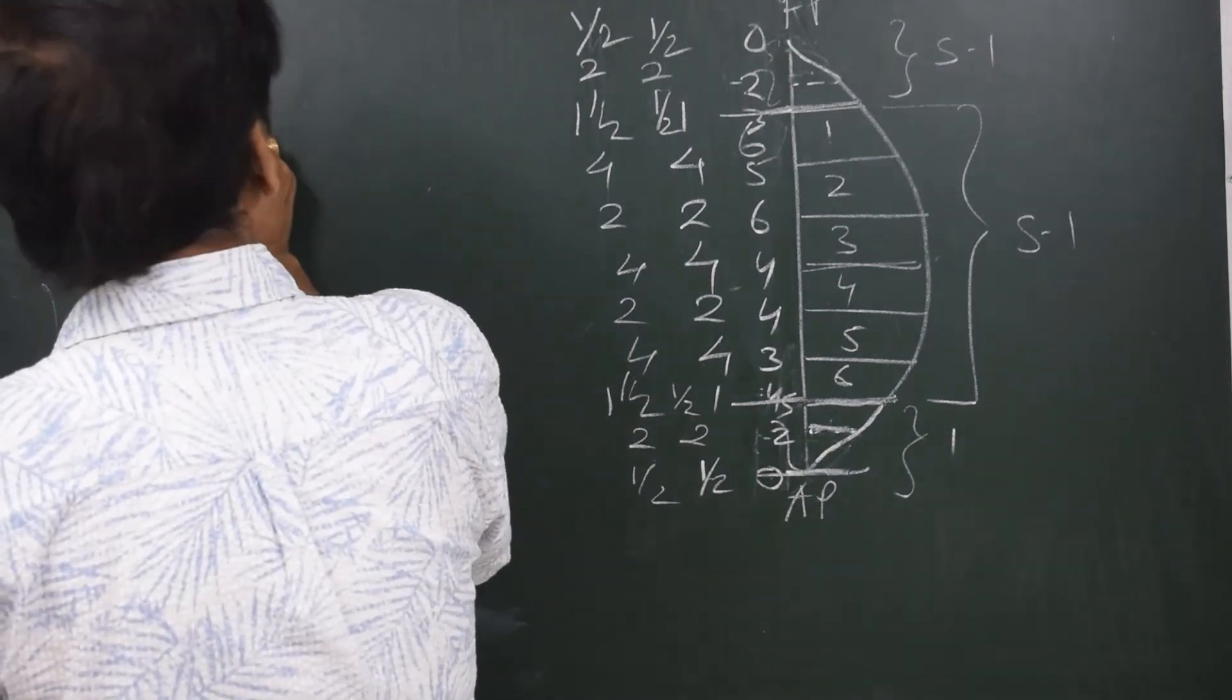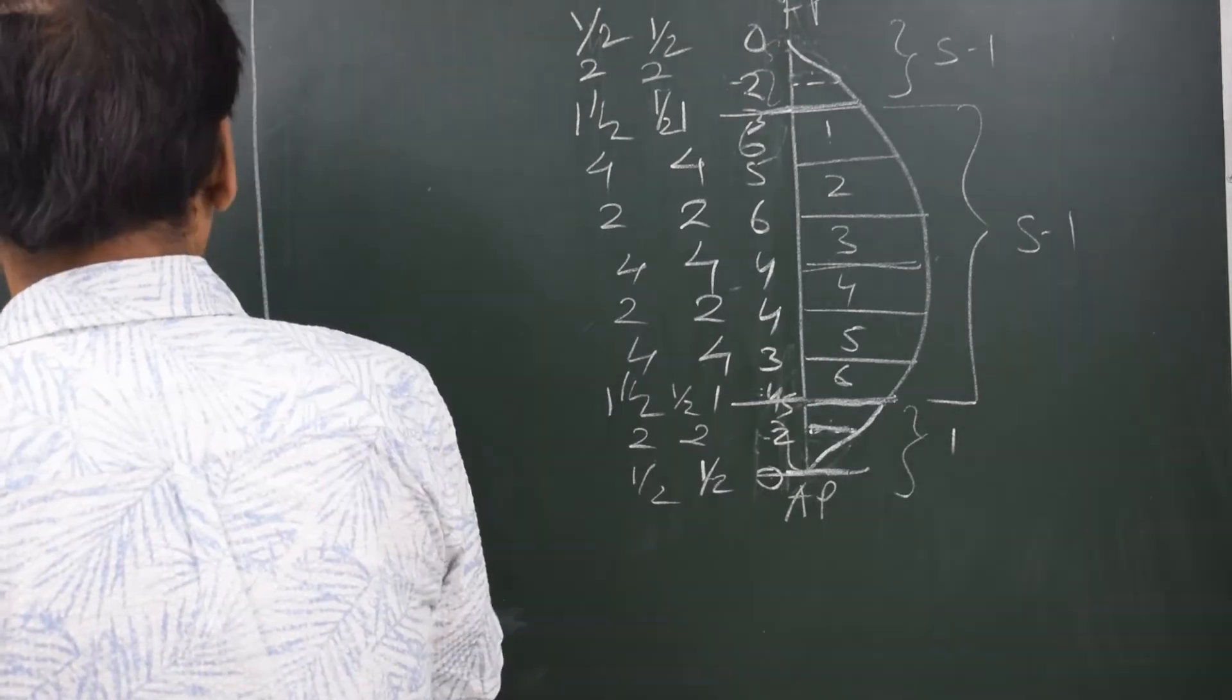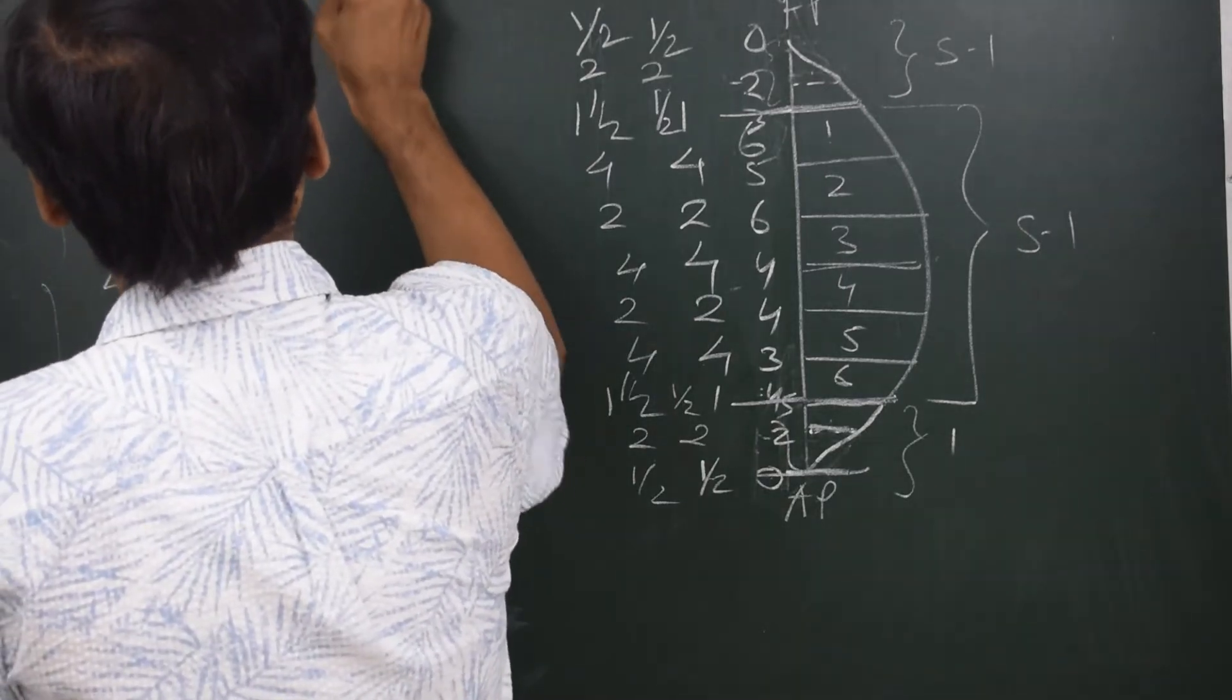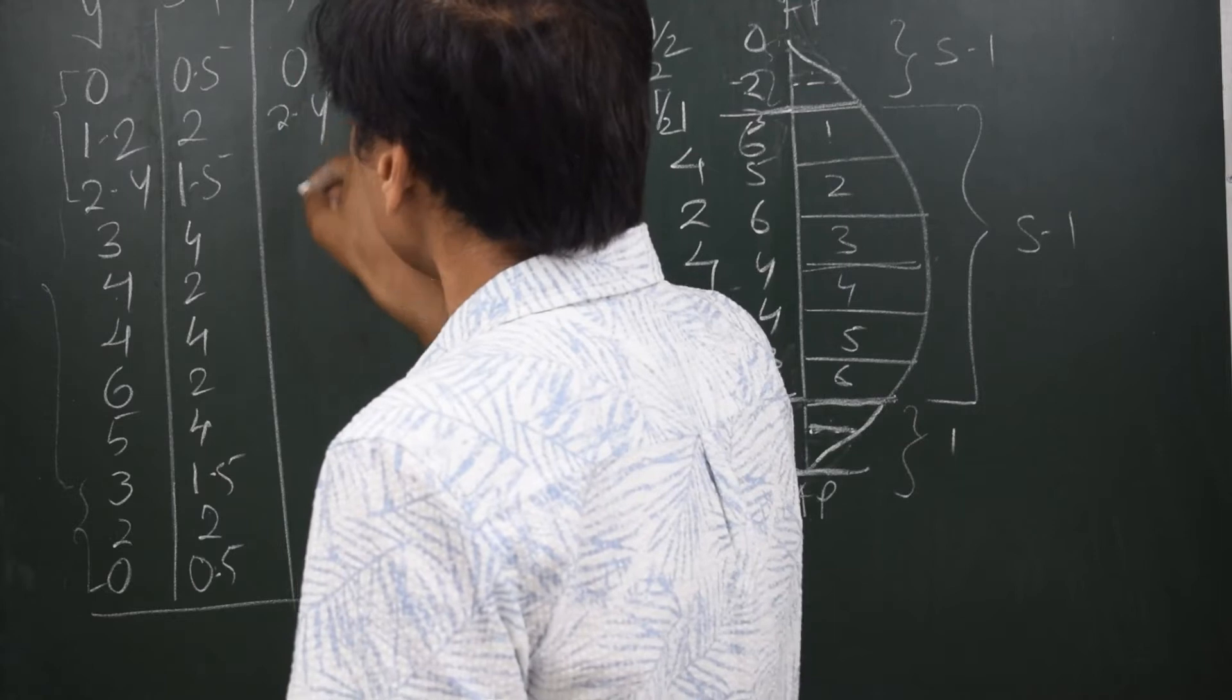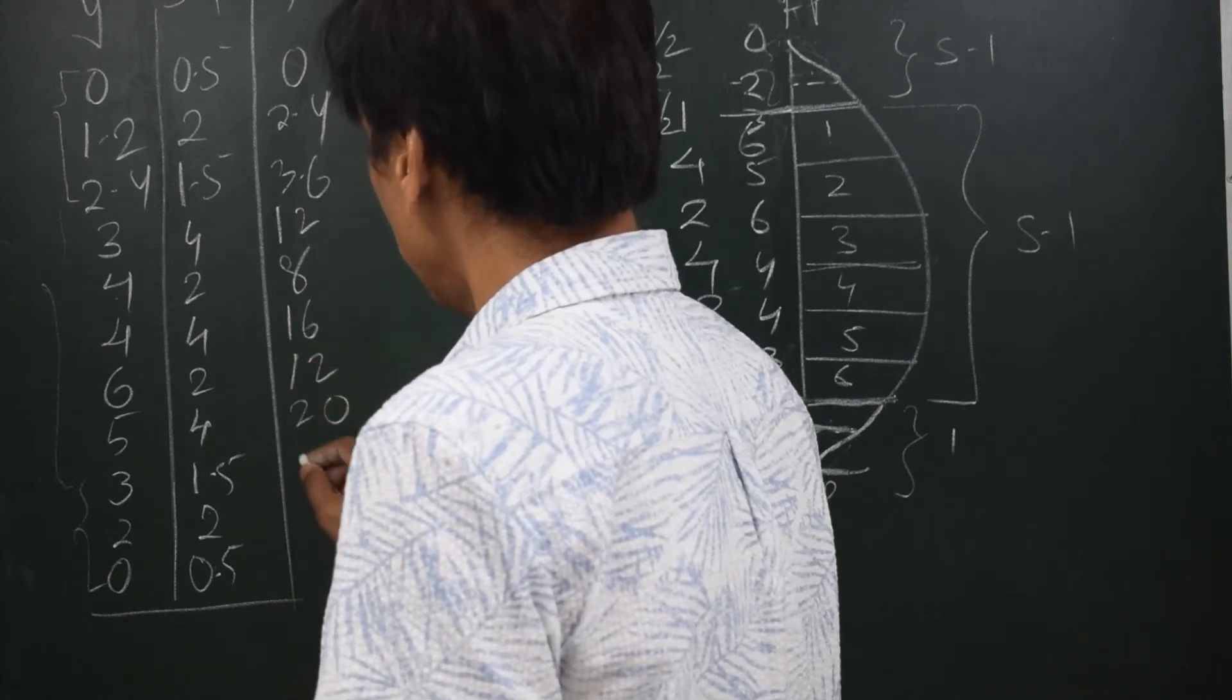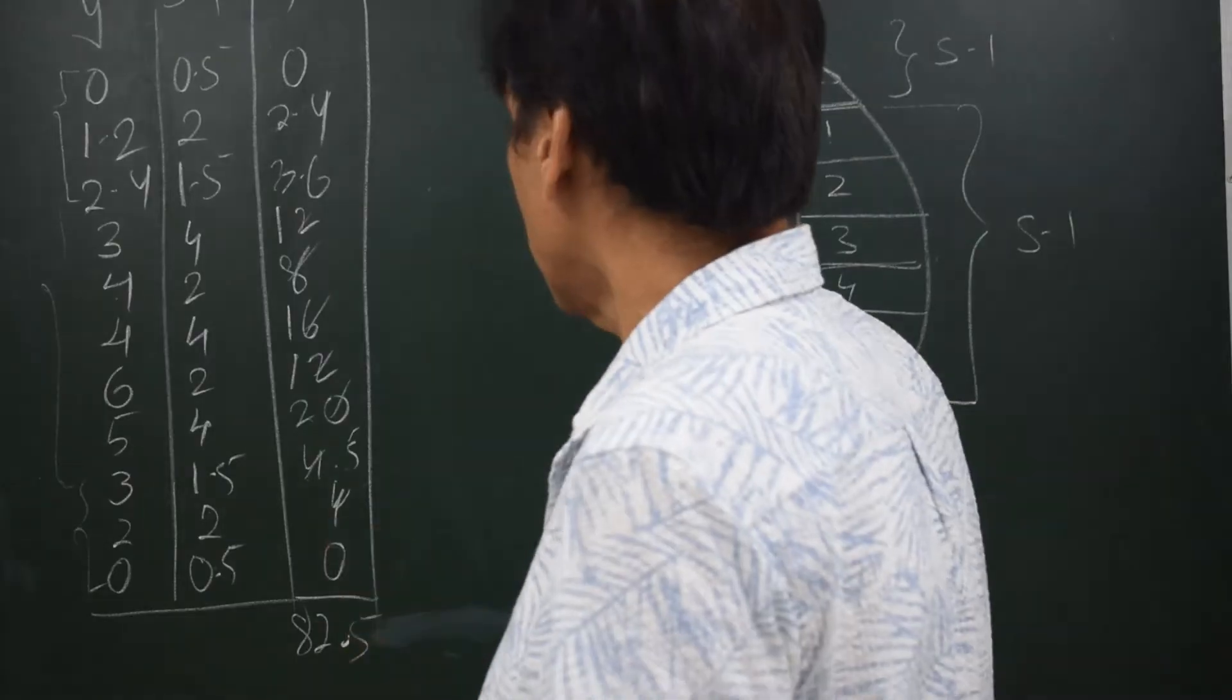So let's write down. The Simpson's multiplier 0.5, 2, 1.5, 4, 2, 4, 2, 4, 1.5, 2 and 0.5. The third column is Y times SM and is the product of the first column. So it will be 0 here, 2.4, 3.6, 12, 8, 16, 12, 12, 20, 4.5, 4 and 0. Let's see what is the sum.